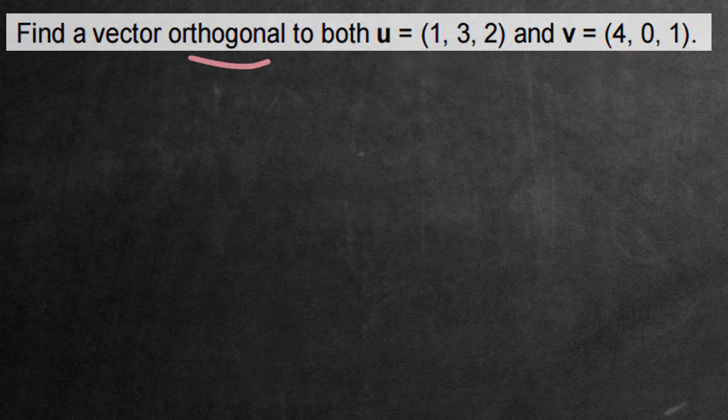So first off what does orthogonal mean? It means it's a vector that's at a right angle, 90 degrees, of these two angles right here, or to these two angles right there.